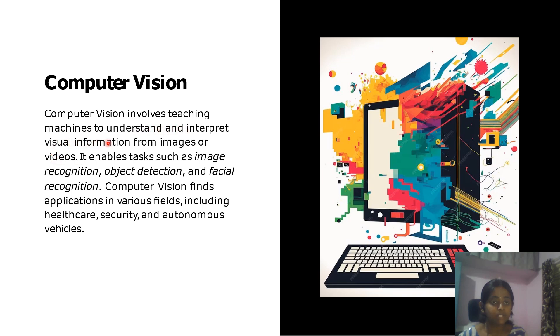Computer vision involves teaching machines to understand and interpret visual information from images or videos. It enables tasks such as image recognition, object detection, and facial recognition.